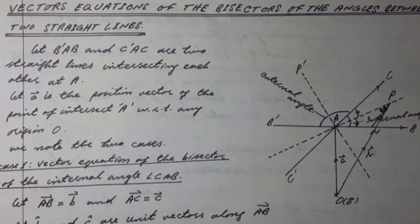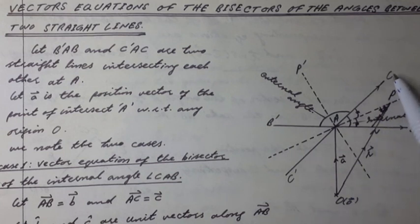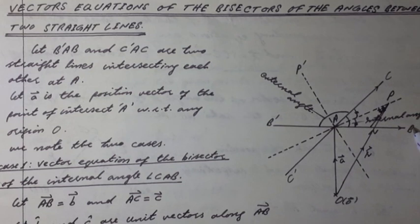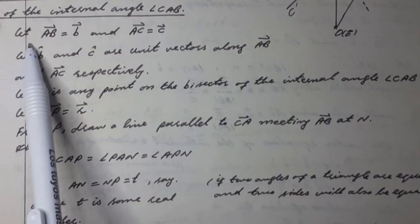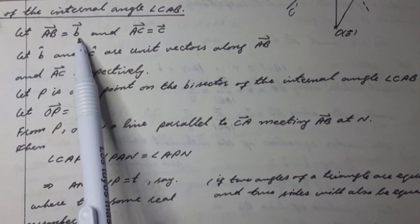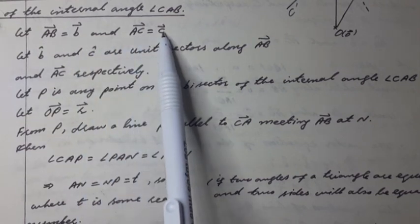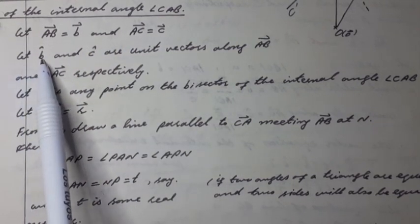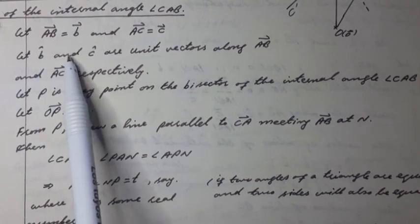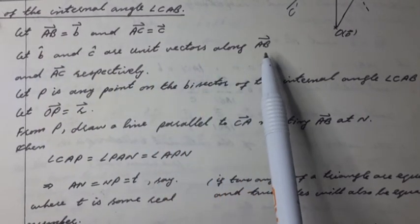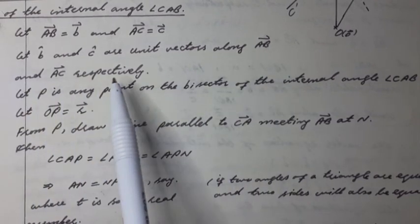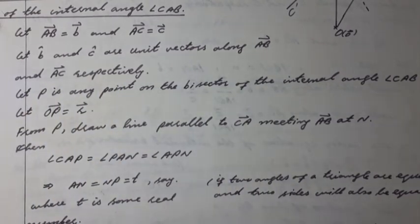Case 1: Vector equation of the bisector of the internal angle CAB. Let AB vector equal B vector and AC vector equal C vector. Let B-hat and C-hat be unit vectors along the vectors AB and AC respectively, as shown in figure.